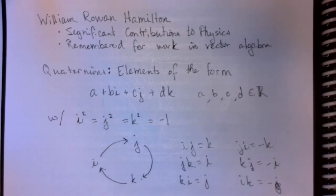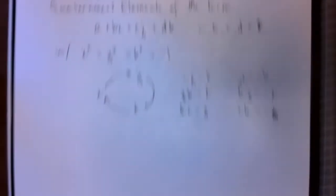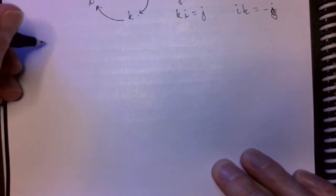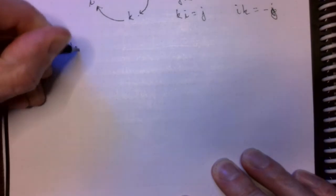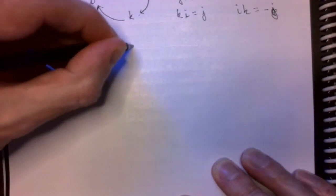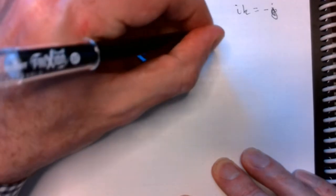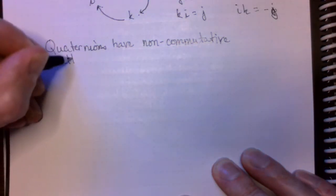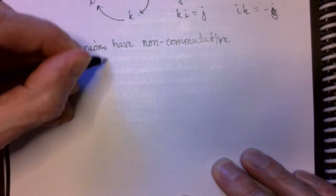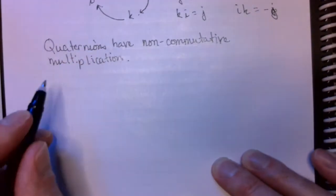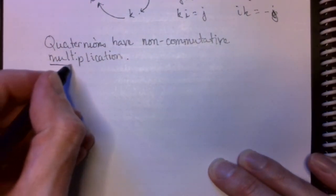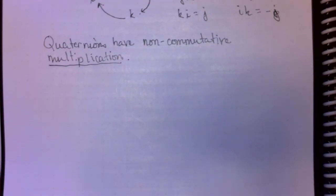So, the quaternions are an example of a non-commutative number system. In fact, I might want to be a little more precise here and say that quaternions have non-commutative multiplication. Addition and subtraction work the exact same way they do in the real and complex number system.